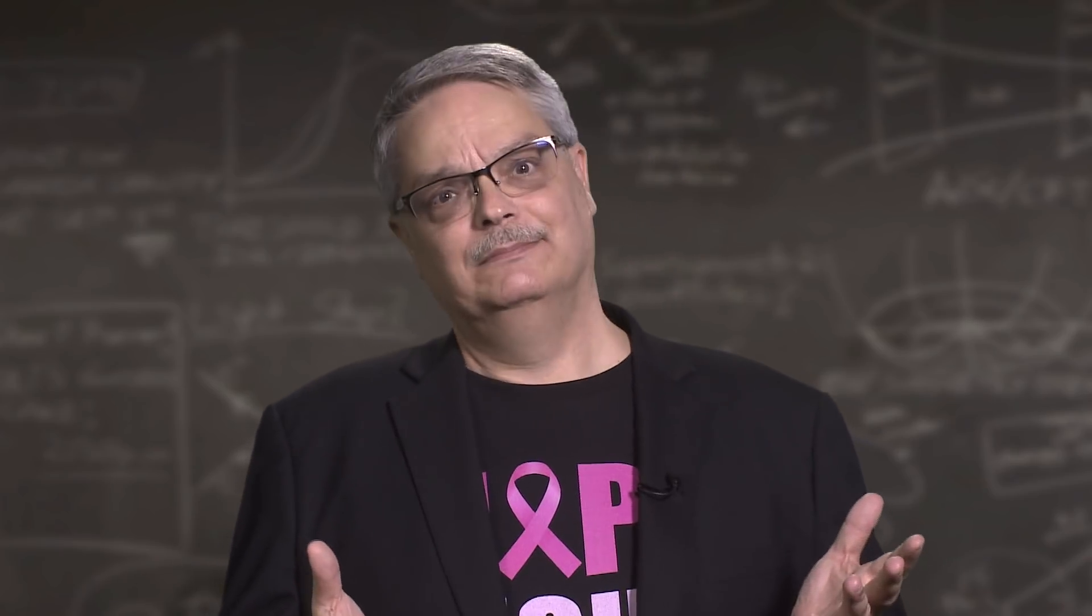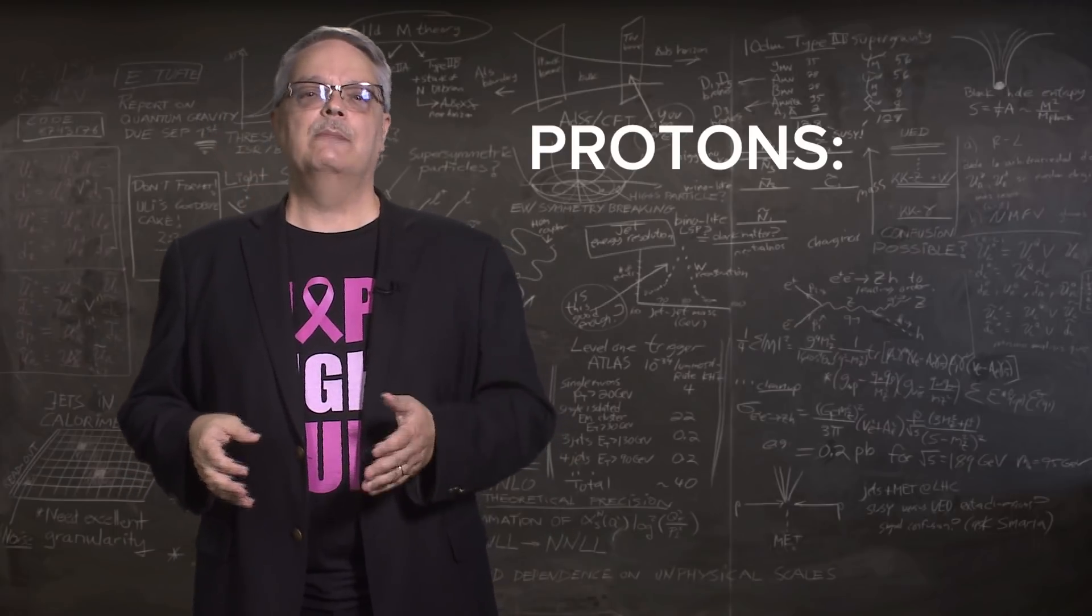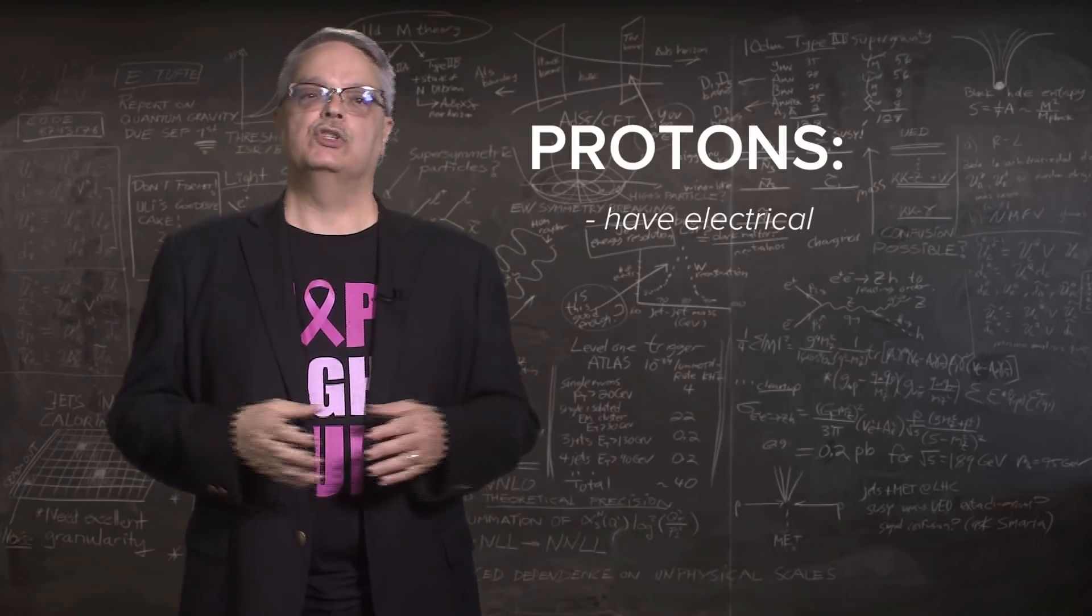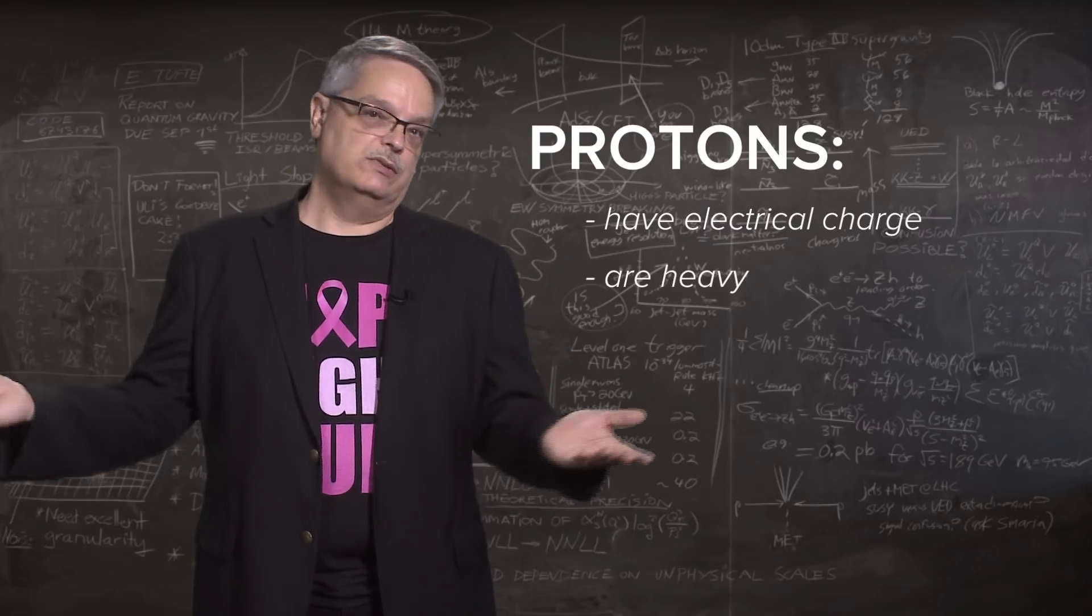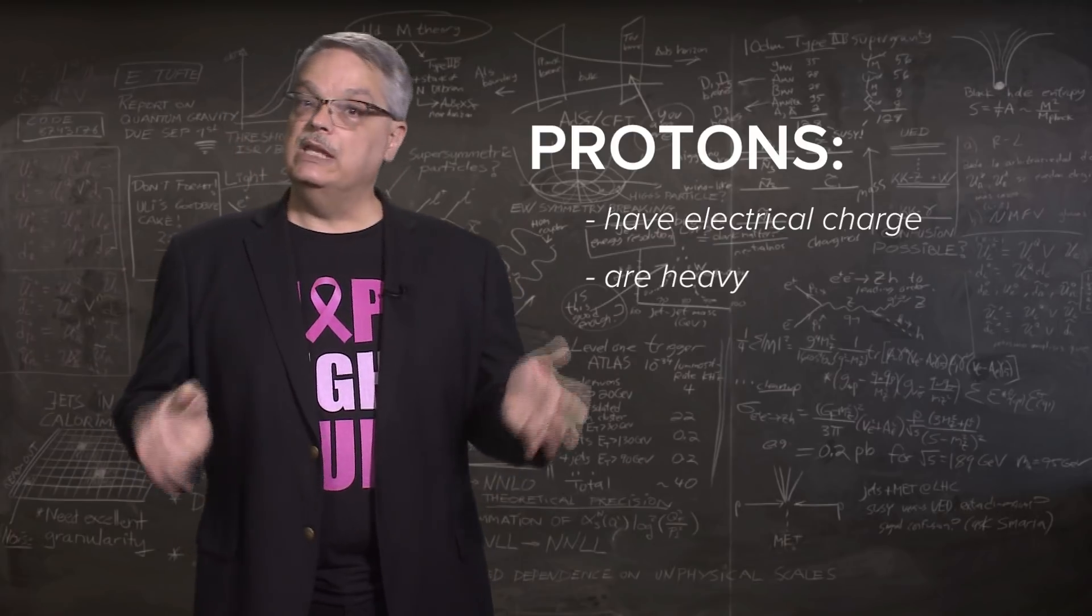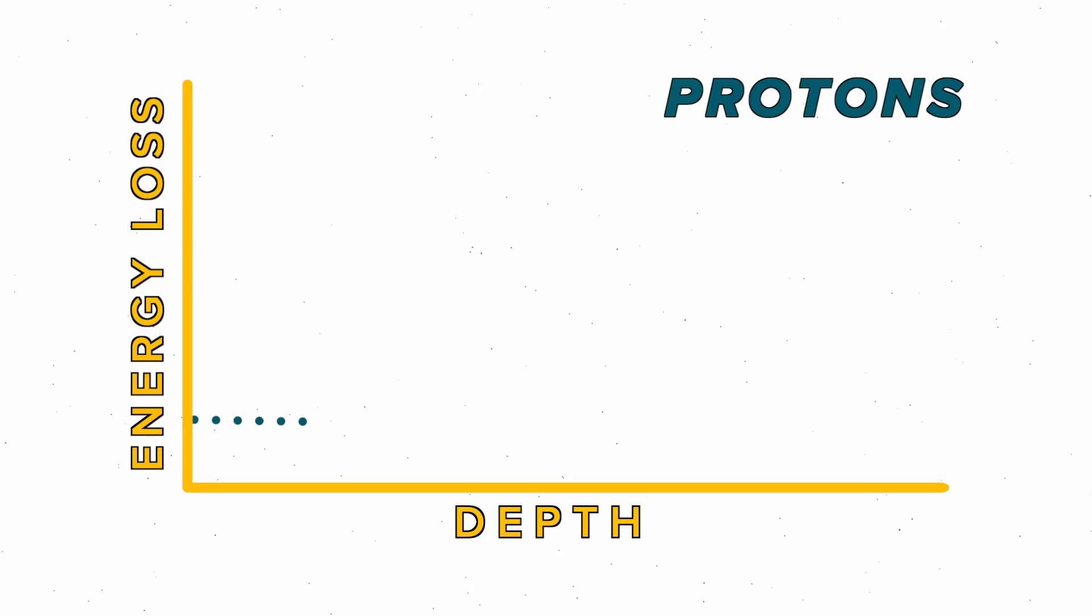Now, what about proton therapy? How does that work? Well, unlike gamma rays, protons have electrical charge. They're also heavy, at least as far as subatomic particles go. And when they pass through matter, they lose their energy fairly slowly for most of the passage, but then lose a whole bunch just at the end. This is called the Bragg peak if you want to look it up.